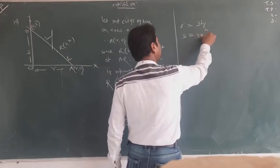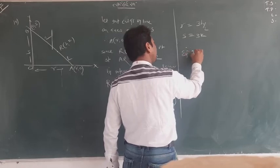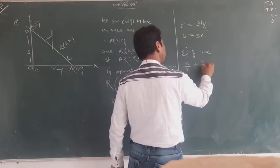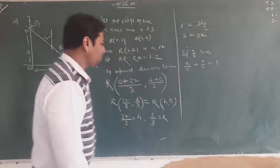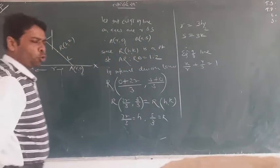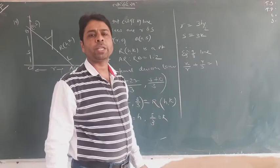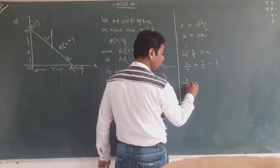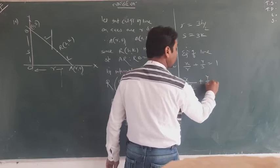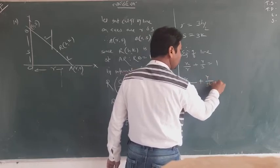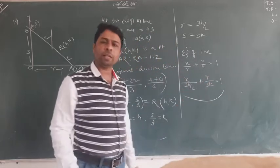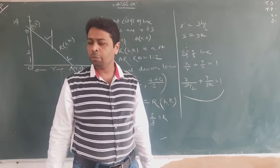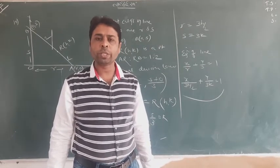After finding r = 3h/2 and s = 3k, the equation of the line in intercept form is x/r + y/s = 1. Substituting: x/(3h/2) + y/(3k) = 1. You can simplify this further if convenient. This completes question 19.